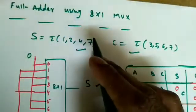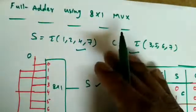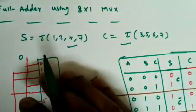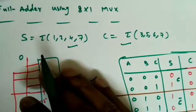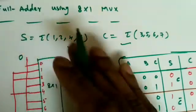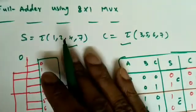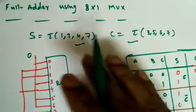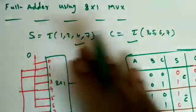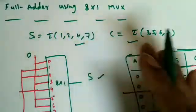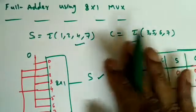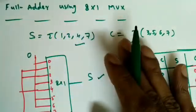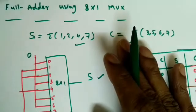This covers the implementation of logic gates, full adder, and other combinational circuits using 4×1 or 2×1 multiplexers. If you have any doubts, please post a comment. If there is any background noise during the lecture, please ignore it and focus on the concepts being explained.